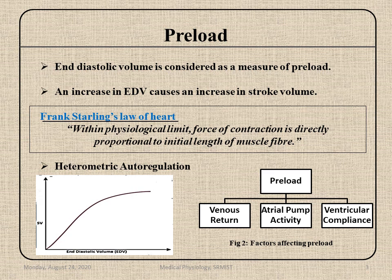Preload: end diastolic volume is considered as the measure of preload. So if there is an increase in end diastolic volume, it will increase the stroke volume. This is well explained by Frank-Starling's law of the heart: within physiological limits, force of contraction is directly proportional to initial length of muscle fiber. In this graph, end diastolic volume is on the x-axis and stroke volume on the y-axis. Within the physiological limit it will be directly proportional, and after that you could see a flat curve. This is also known as heterometric autoregulation, as the change in muscle fiber length will be affecting the volume.